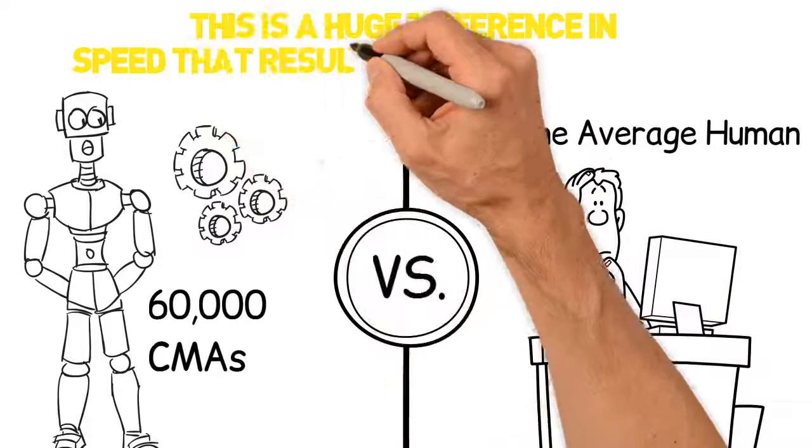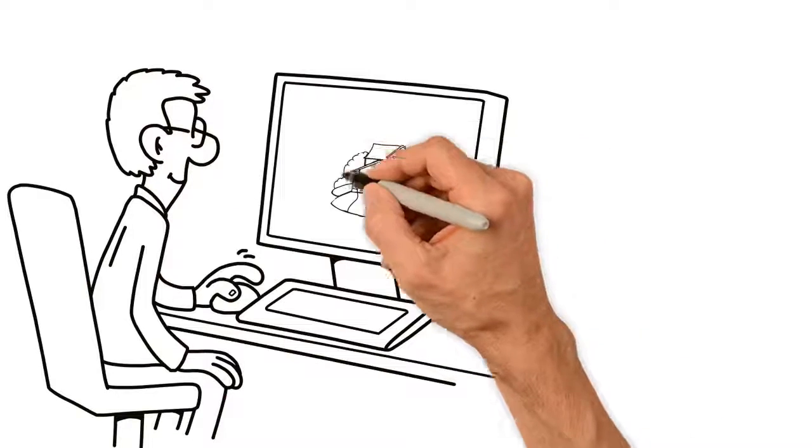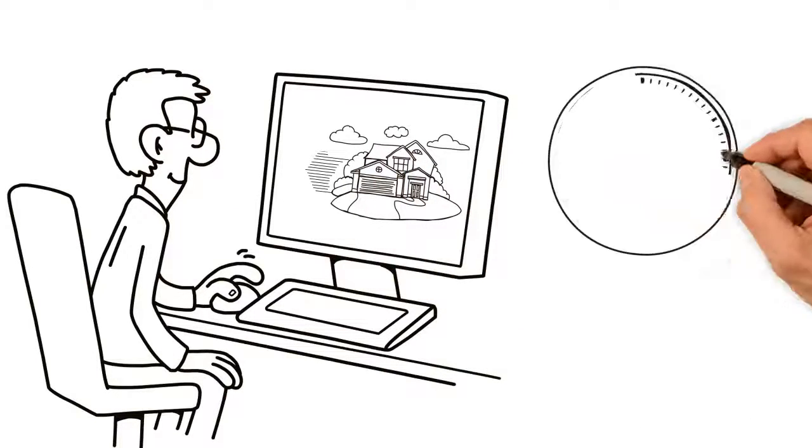This is a huge difference in speed that results in more productivity. MLS DealFinder brings both of these together to form a powerful system.